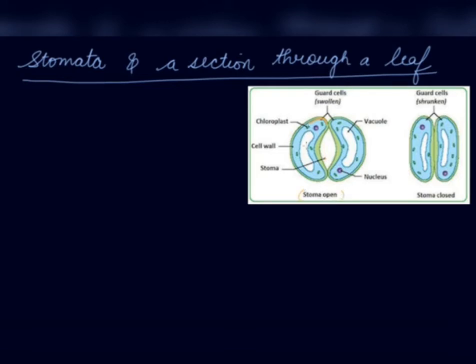This is the chloroplast cell wall. And the stomata diagram also shows the nucleus and vacuole. Carbon dioxide from air is taken in through the tiny pores present on the surface of the leaves.